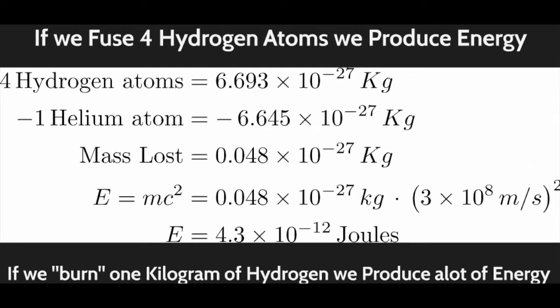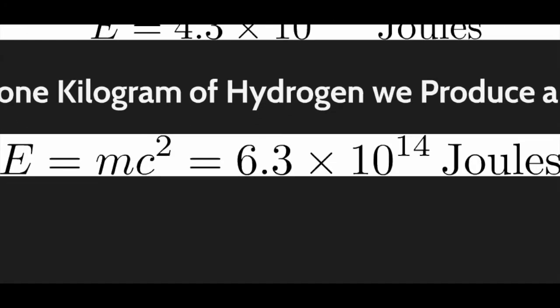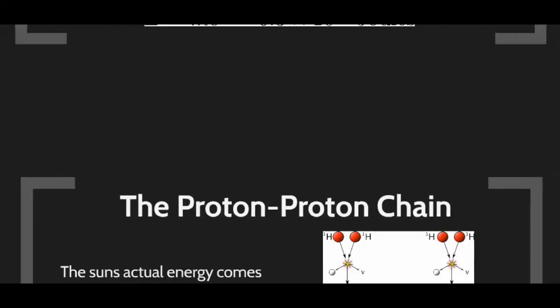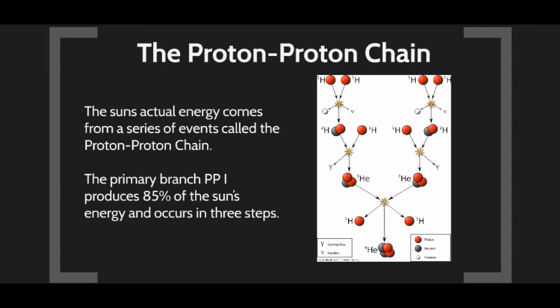That doesn't sound like a whole lot of energy, but when you consider how many nuclei there are — if we burn one kilogram of hydrogen, that gives us 6.3 times 10 to the 14 joules. That is 10,000 times more than any chemical reaction, so this is a very powerful reaction that releases a lot of energy. This process in the Sun is called the proton-proton chain.